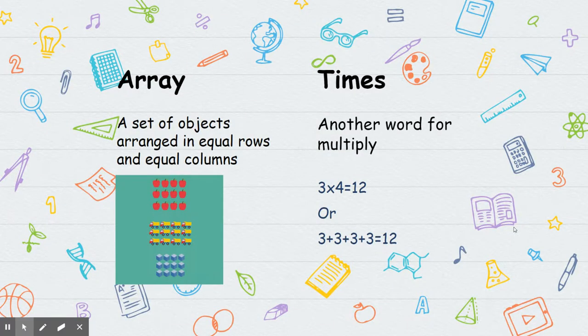An array. An array is a set of objects arranged in equal rows and equal columns. Sometimes it helps you solve problems like multiplication problems. If you need to make an array, here's some examples using pictures and some blocks at the bottom.